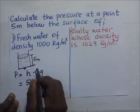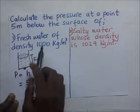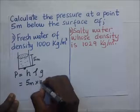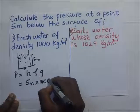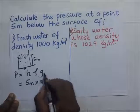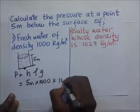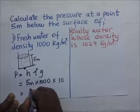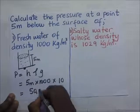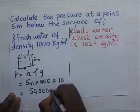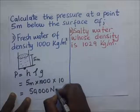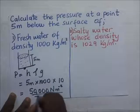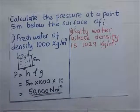The density of fresh water is 1000 kg/m³, so it's five times one thousand, times gravity which is ten. Our answer is therefore 50,000 newtons per meter squared. That is our answer.